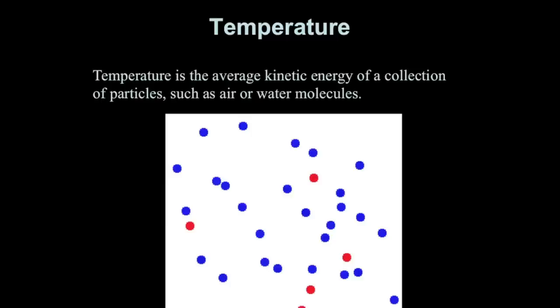I'll also use the word temperature. In science, temperature means something very specific. Temperature is the average kinetic energy of a collection of particles, such as air or water molecules. In the image here, I have a container with a lot of dots. Those dots could represent air molecules in a room or water molecules inside a bucket of water.